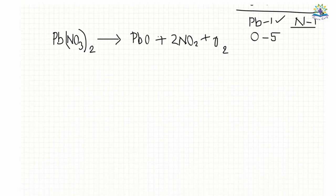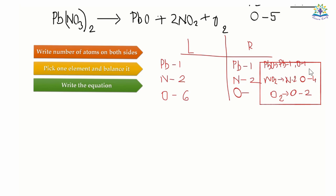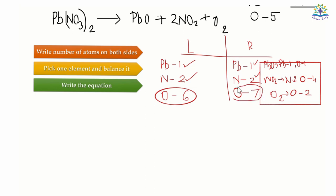Now back to step 1. The number of atoms of lead remains the same. The number of atoms of nitrogen have been balanced on both sides. The number of oxygen on the left side is six, whereas on the right side is seven. One of the numbers is even and one is odd. Since I have a compound which has only one oxygen atom, I will multiply 2 to that. So here we have to multiply 2 to lead also.